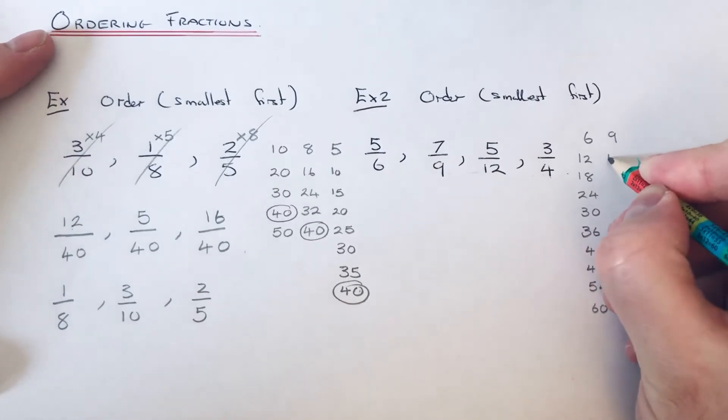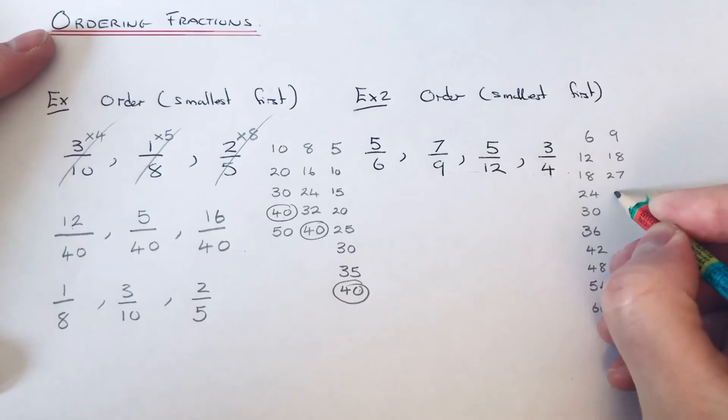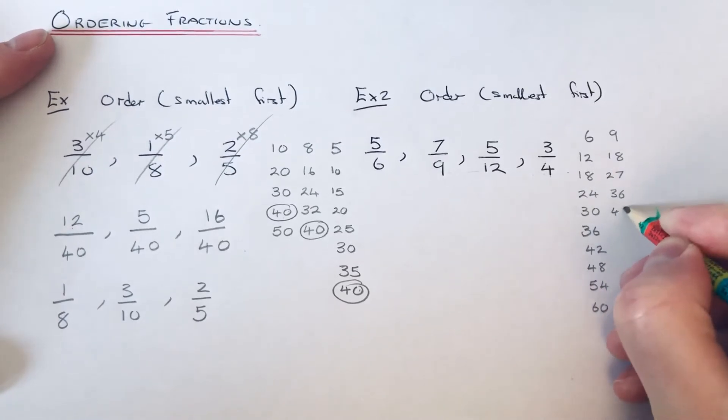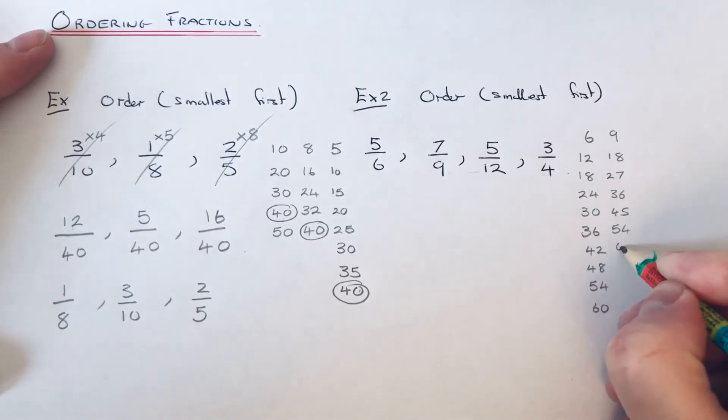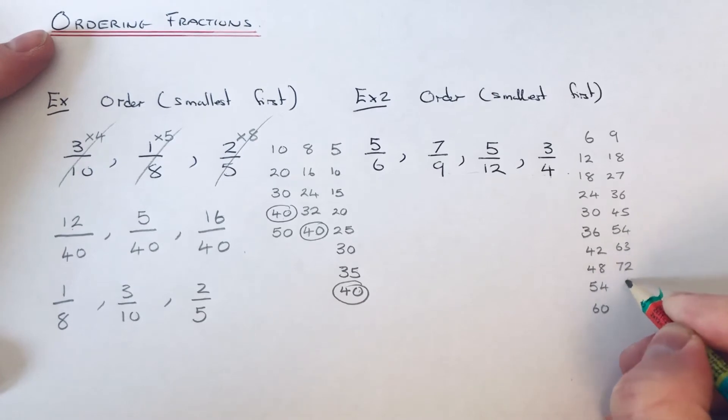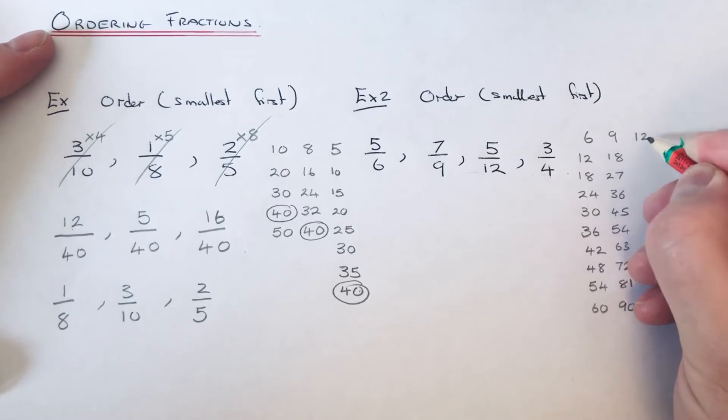Our 9's: we've got 9, 18, 27, 36, 45, 54, 63, 72, 81, and 90. Our 12's: we've got 12...